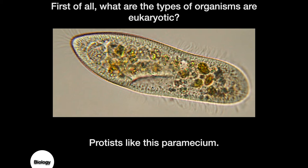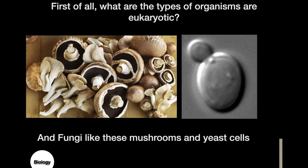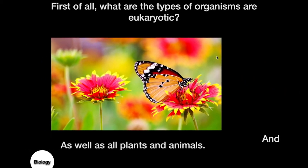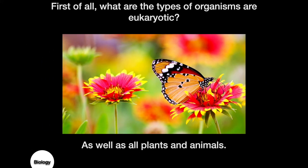Next we have fungi — mushrooms and yeast cells. These organisms are eukaryotic; however, mushrooms are multicellular and yeast cells are unicellular. This is an image of a yeast cell undergoing cell division. The small cell forming here is called a bud, which is a form of asexual reproduction. And finally we have plants and animals.